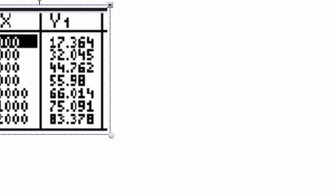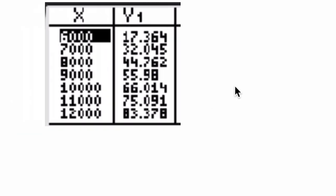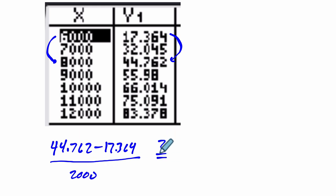Okay, so here, we're looking at average rate of change. So from 6,000 to 8,000, this is our change. So our average rate of change would be 44.762 minus 17.364, the difference of the outputs, over 8,000 minus 6,000, 2,000. Our question is, how does it compare, does it equal, what's going on here, to 9,000 to 12,000, this interval here? So that's 88.378 minus 55.98 over 12,000 minus 9,000, which is 3,000. So we just want to know, are these the same, are they different?